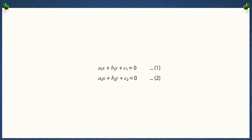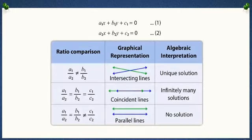You have learnt about the graphical and algebraic methods of solving a pair of linear equations in two variables. Given a pair of linear equations, you can easily identify the type of solution using the table provided here. The graphical and algebraic methods can be used only when the equations are in linear form. But what if the equations are not in linear form? Can we still use these methods to solve them? Let's find out.